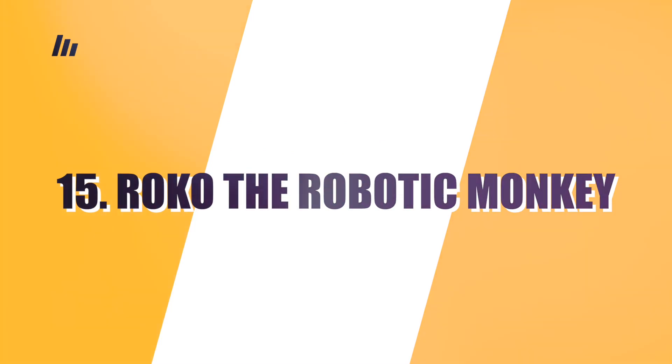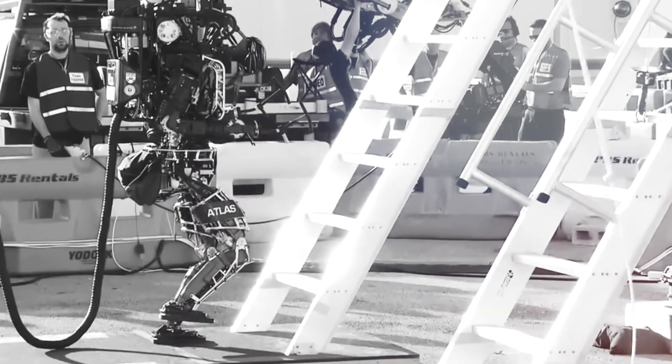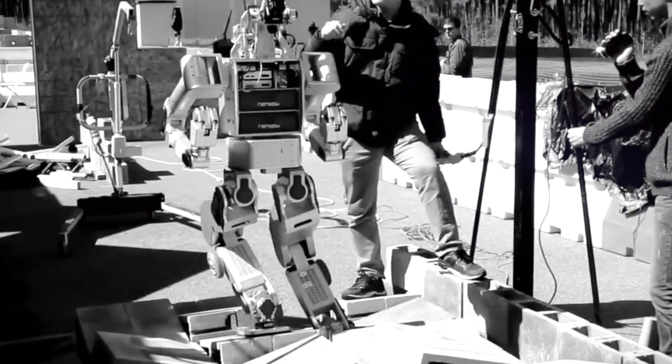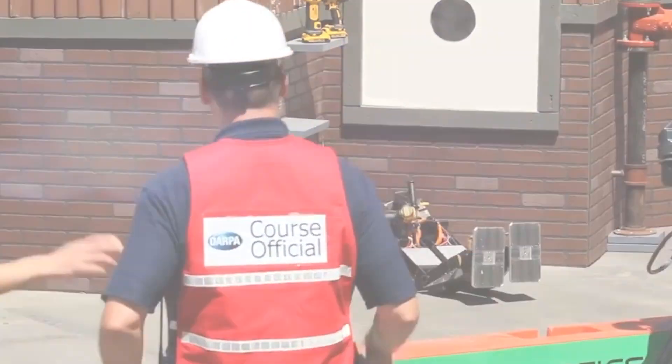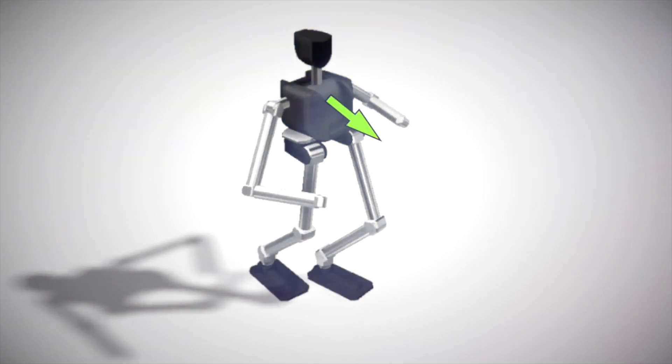Number 15: Roco the Robotic Monkey. Roco is the only entry on our list that is in the design stage and has not yet been prototyped, but what a concept it is. It is a furry, biometric, fully robotic ape that can travel deep into the jungle without disturbing wildlife.